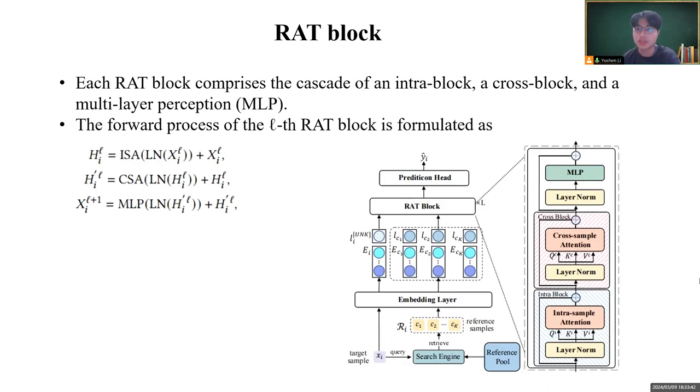To integrate intra- and cross-sample feature interactions to enhance CTR prediction, a naive idea is to concatenate retrieved samples, appending them to the target as extra feature fields, and use joint attention to model feature interactions. However, it exhibits an efficiency issue.